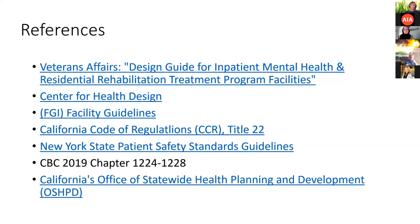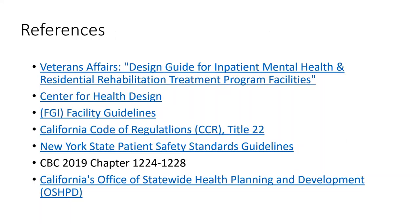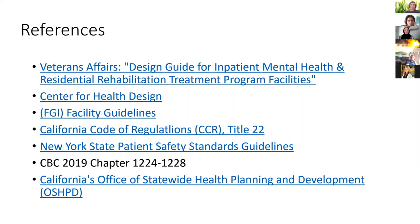Some excellent references for those designing these facilities: the VA has a great set of documents; the Center for Health Design has many good sources; the FGI guidelines; the CBC; Title 22, Chapter 9; and the New York State Patient Safety Standards guidelines, a great resource for items going into the facility. OSHPD is also a resource — because these facilities are fairly new and reference multiple parts of code, we have the opportunity to provide feedback on what's working and what isn't, helping inform and improve the process.